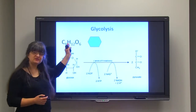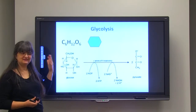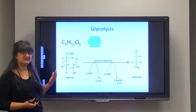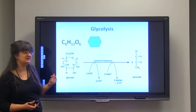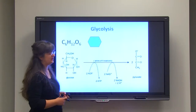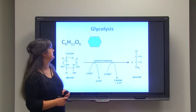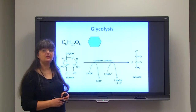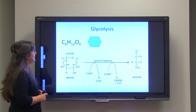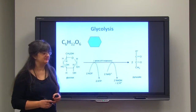Glucose is the molecule that our brain can digest — the only monosaccharide that our brain can actually utilize — and it is one of the major energy molecules in our body. Glycolysis is happening in the cytoplasm.